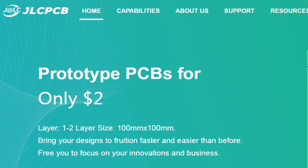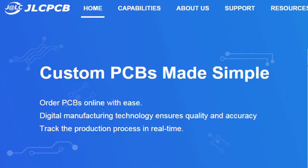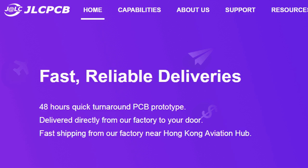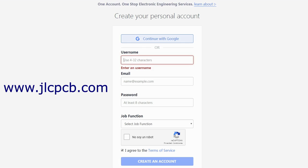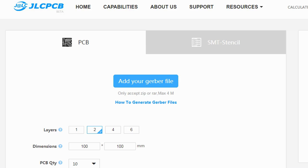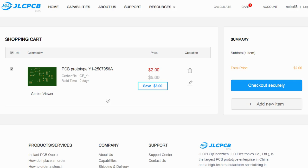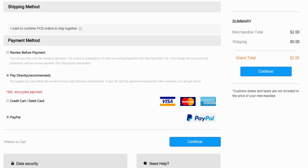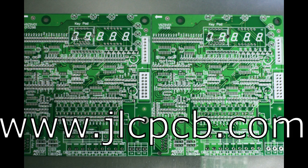This video is sponsored by JLCPCB. JLCPCB is a company that makes excellent quality PCBs at an unbeatable price. You can order boards online in minutes. After registration, upload your Gerber files, select the PCB properties, select the payment method and place your order. Best price and quality for all your PCB needs.